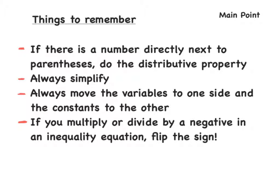So there are important things to remember. First, if there is a number directly next to parentheses, do the distributive property — always do the distributive property. Next, always simplify each side of the equation. Next, always move the variables to one side and the constants to the other. You learned this previously when we were doing two-step equations. Also, from the previous lesson: if you multiply or divide by a negative in an inequality, you must flip the sign.